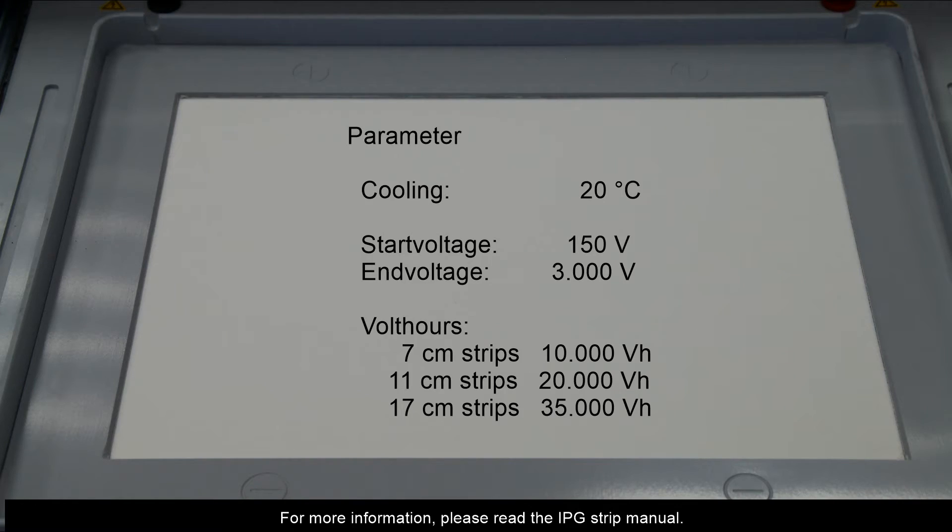Set the chiller to 20 degrees. Use a start voltage of 150 and an end voltage of 3000 volts. Adapt volt-hours according to the strip length.